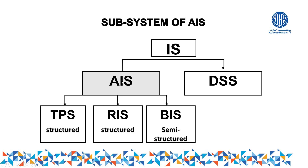Our main focus is on the different types of AIS. One part of AIS is called TPS, the second part is called RIS, and the next part is called BIS. One more thing mentioned here is structured and semi-structured — we will discuss that after explaining each part.